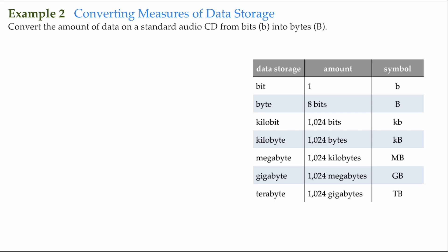So for this example, we are going to convert the amount of data on a standard audio CD from bits, which is labeled with this little lowercase b, into bytes, which is labeled with this uppercase B.